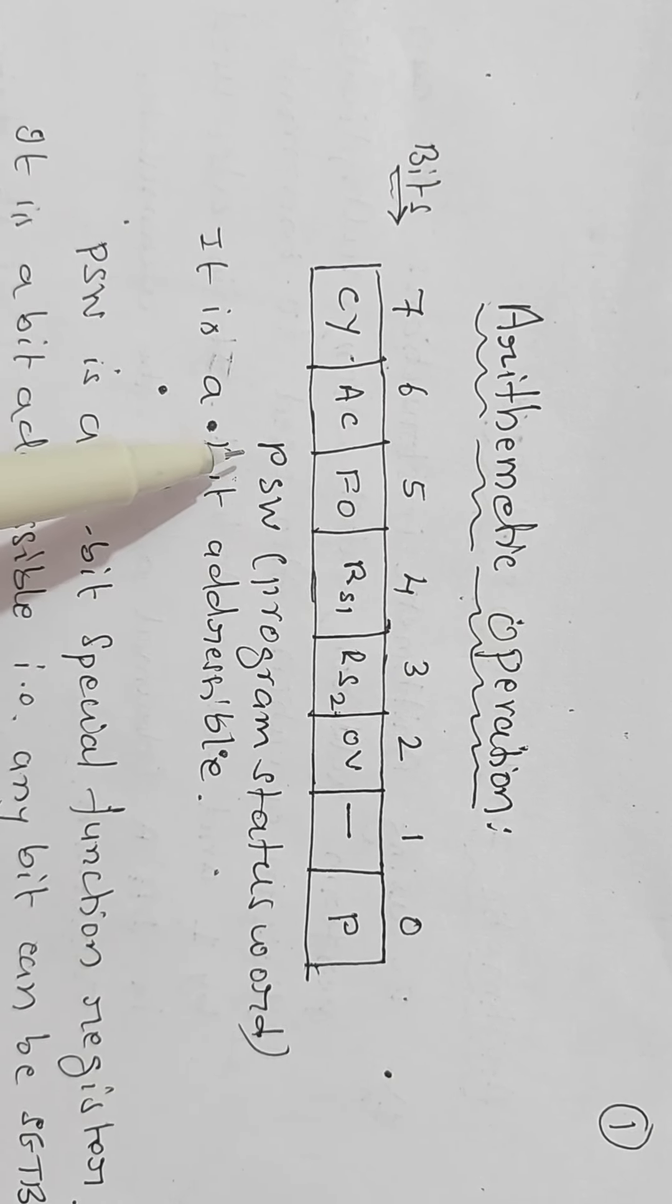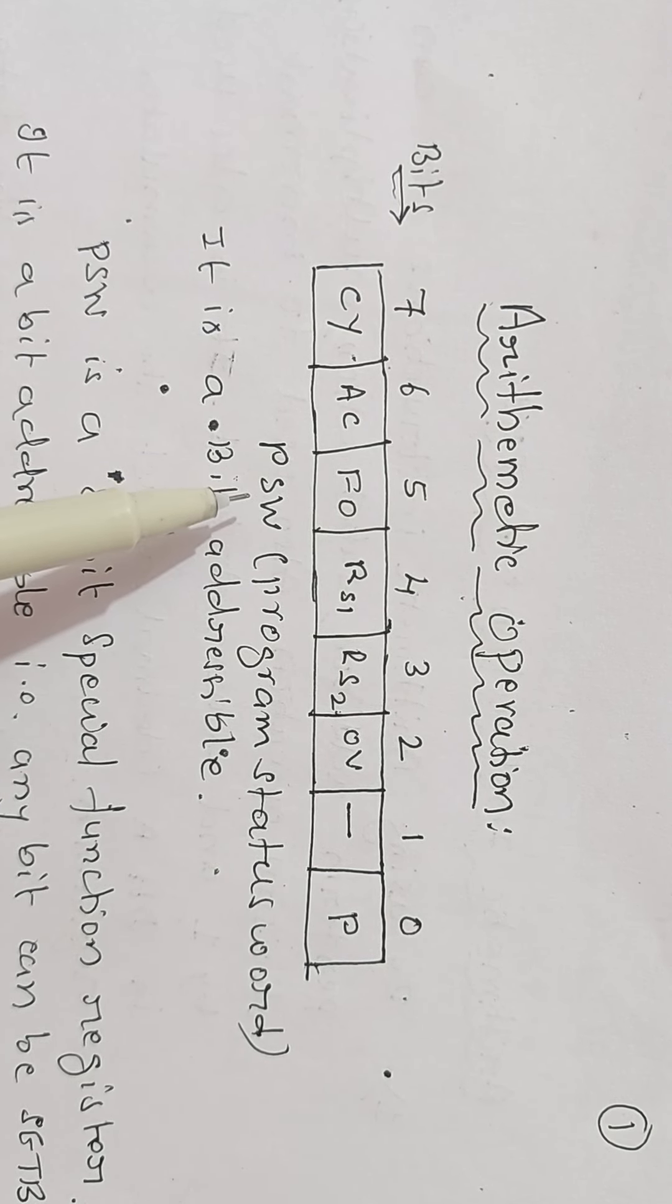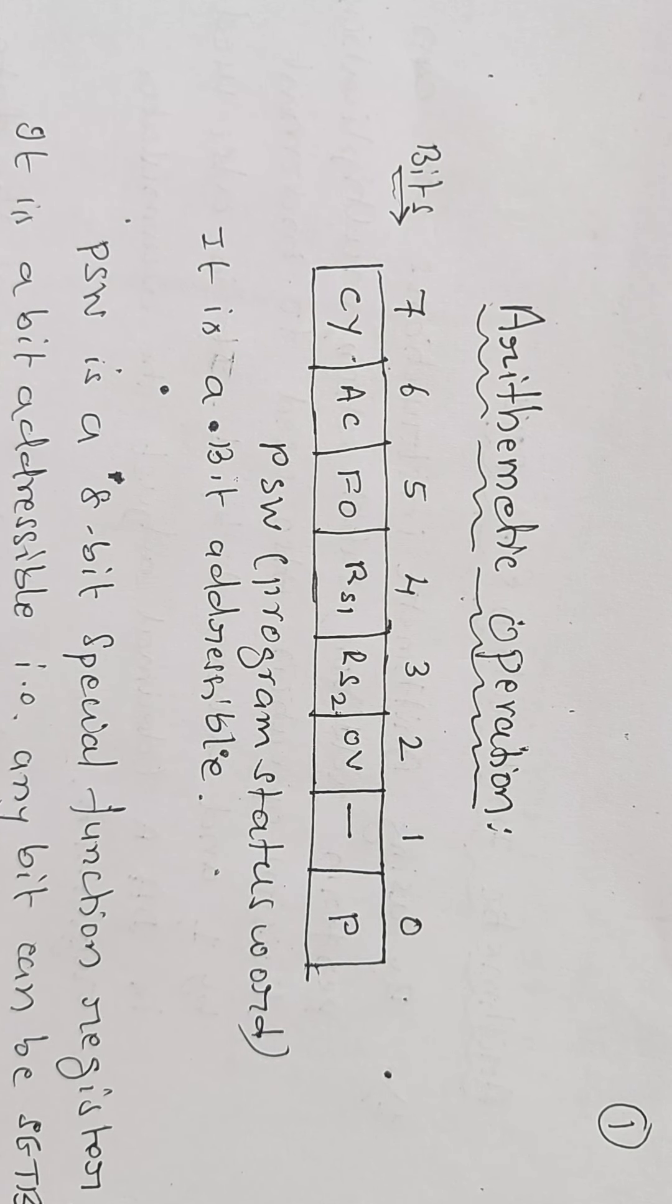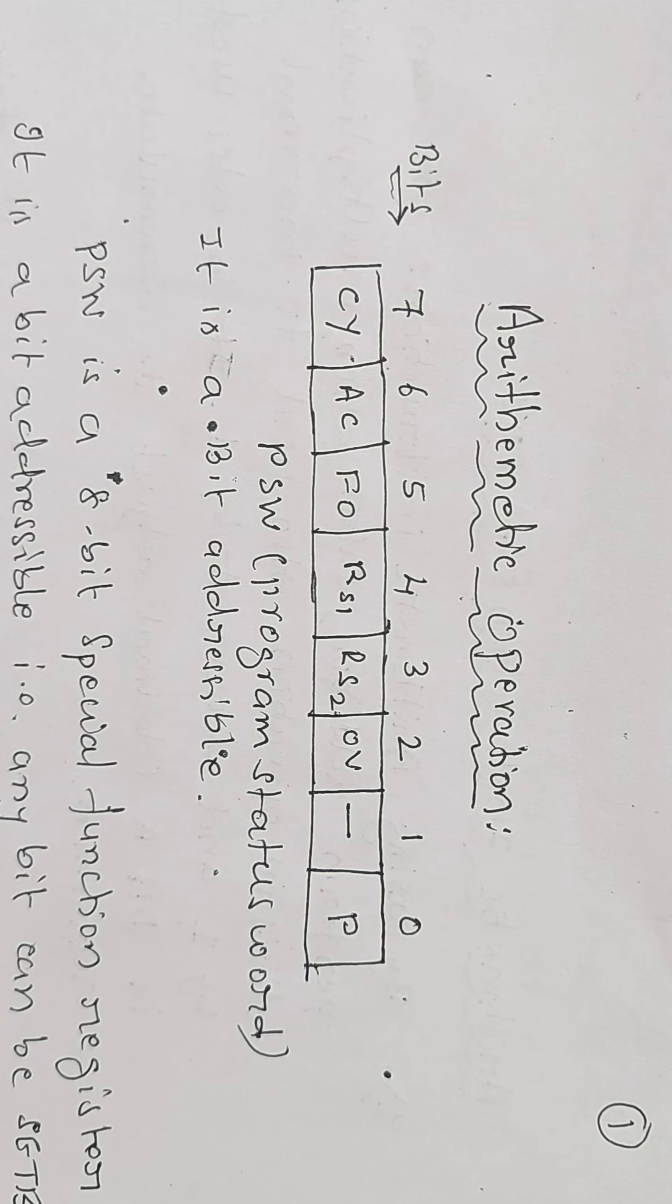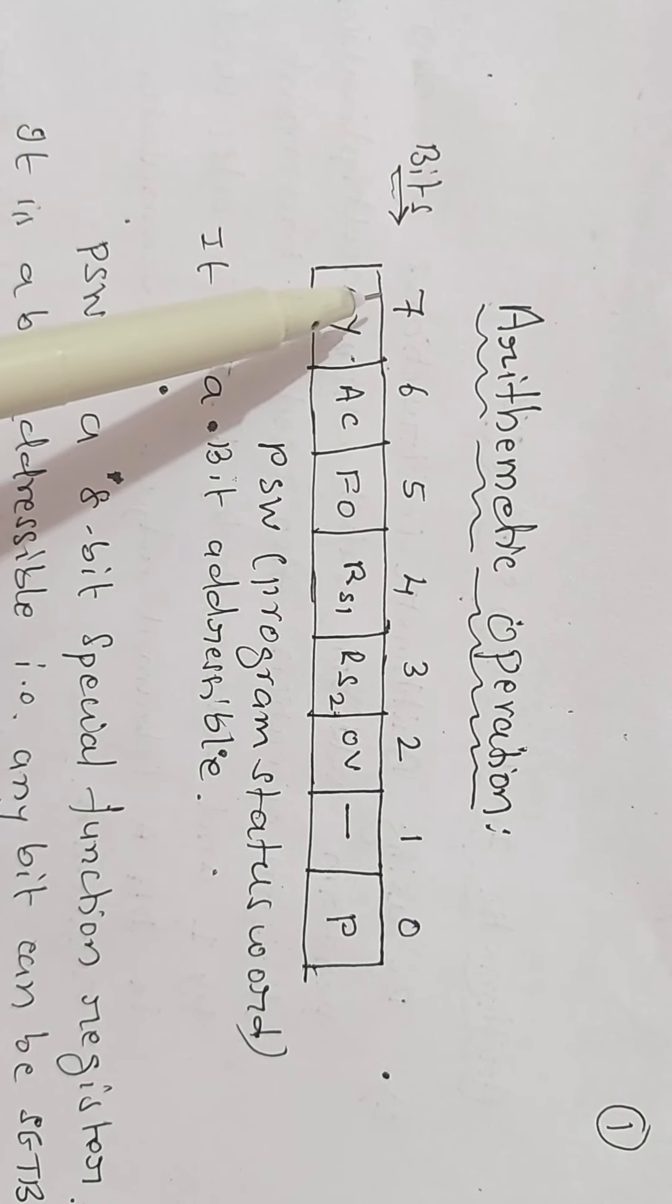A program status word PSW register. A program status word is a special function register which 8051 contains. This program status word is an 8 bit register. The bits are 0, 1, 2, 3, 4, 5, 6, and 7.